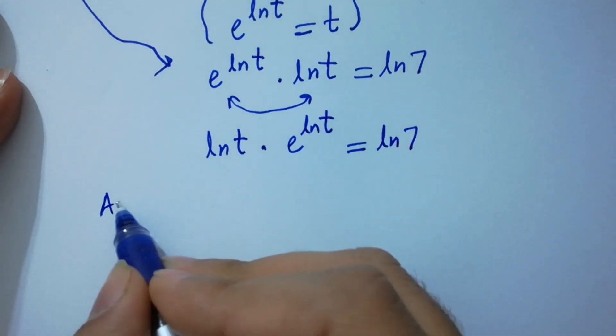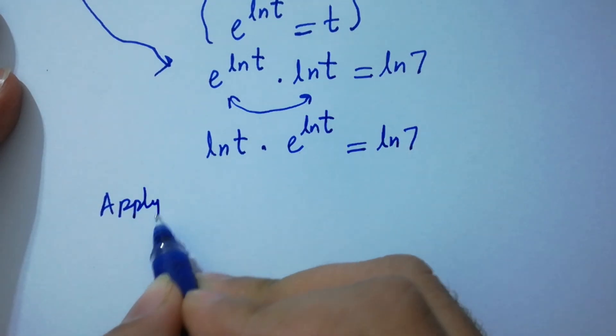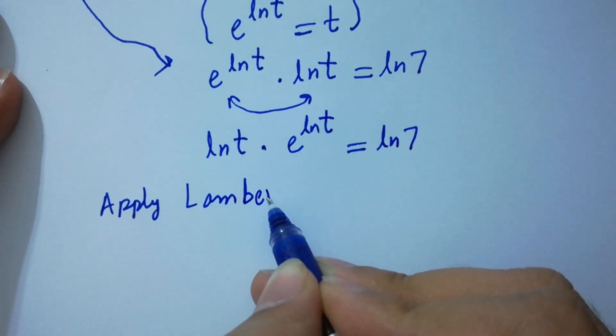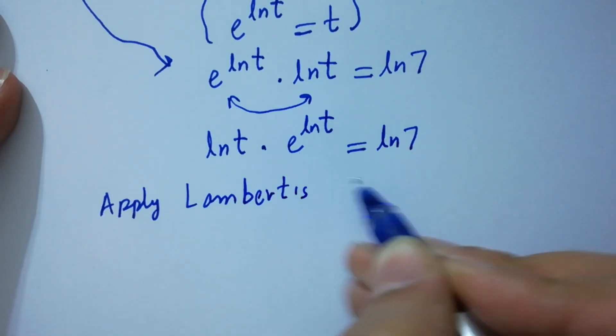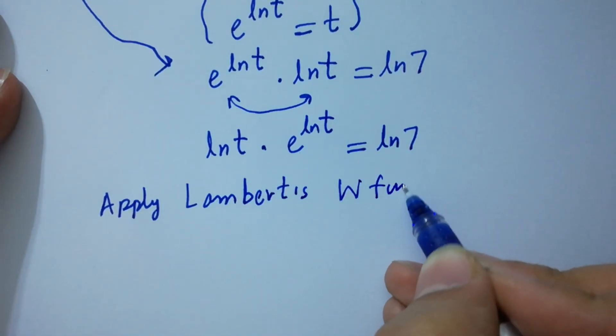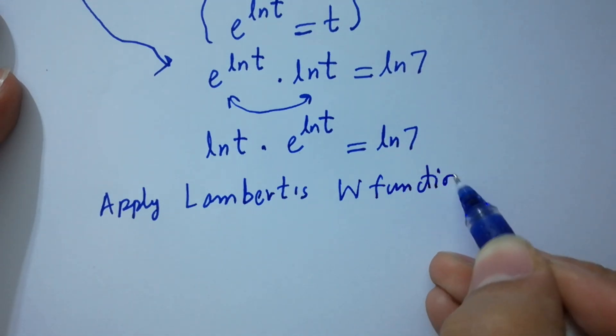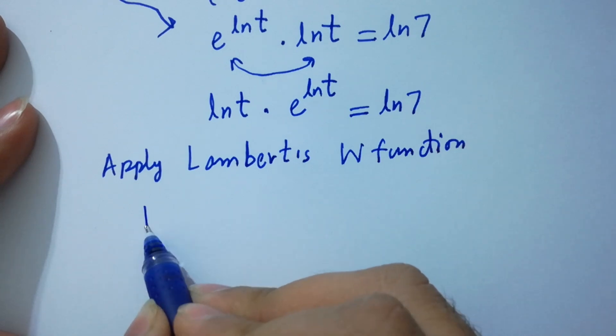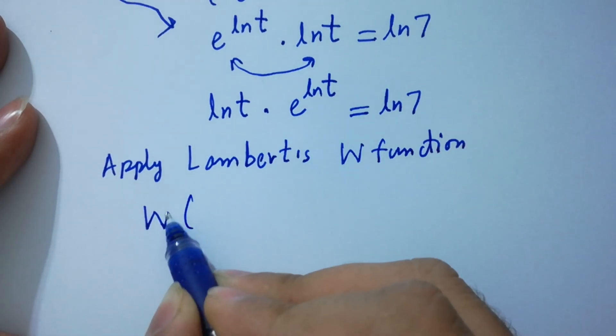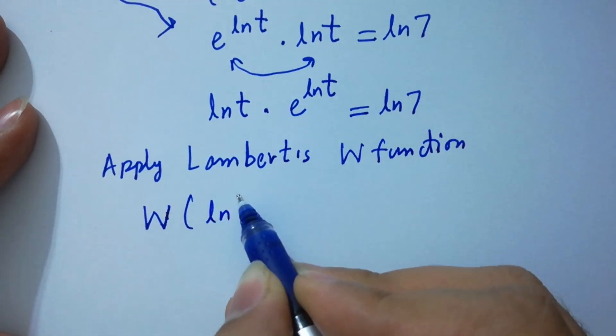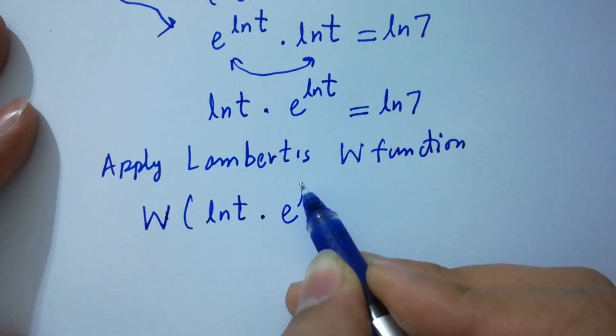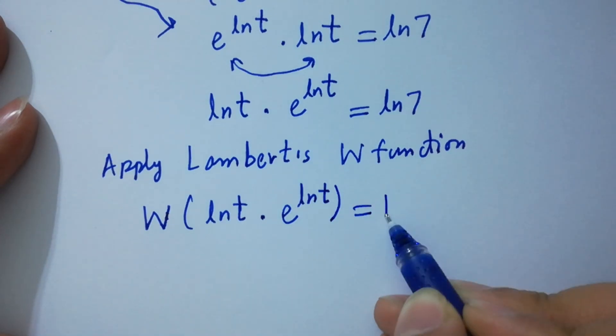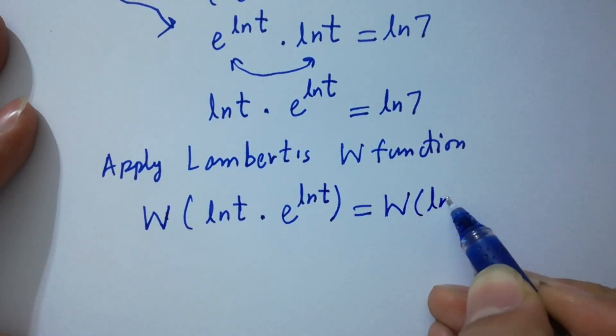Lambert's W function: W(ln t times e to the power ln t) equals ln t. So W(ln t) equals ln 7.